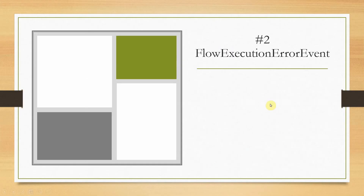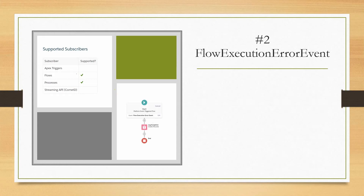The second standard platform event is called Flow Execution Error Event. Whenever a screen-type flow element is failing, the system generates a standard platform event called Flow Execution Error Event. You can consume this internally only — through a flow or through Process Builder. I have consumed this internally to create exception details and log exception records.